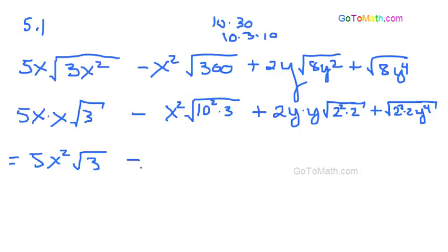Alright. Minus. And then, what do we got going on here? We got this is going to be 10x squared. And this will be the square root of 3. Okay, so we've got like radicals and like terms. 5x squared and minus 10x squared. So we'll be able to join those together. That looks good.